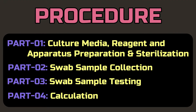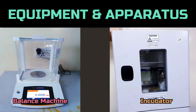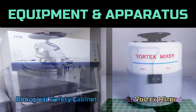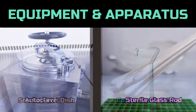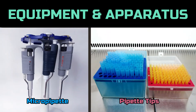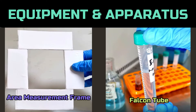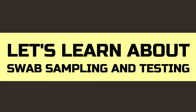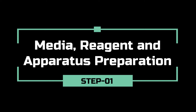Swab test involves four steps: culture media reagent and apparatus preparation, swab sample collection, testing, and calculation. For this technique we need a balance machine, incubator, biological safety cabinet, vortex mixture, autoclave, sterile glass rod or spreader, sterile petri dish, cotton swab stick, micro pipette with tips, area measurement frame, falcon tube, tryptic soy agar, and sodium chloride.